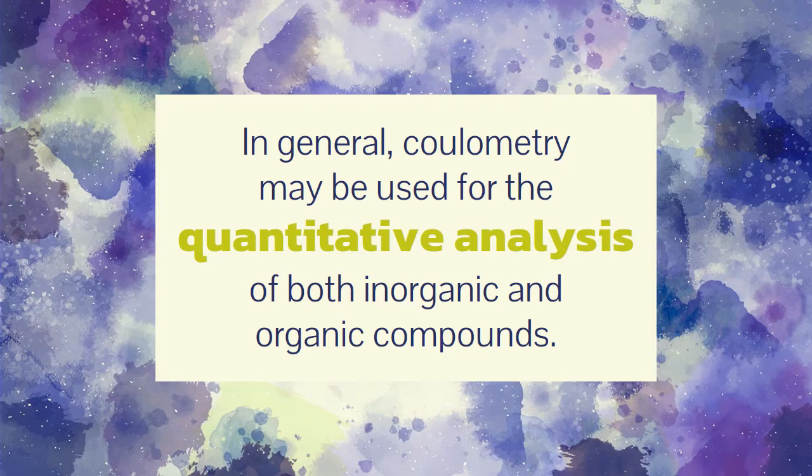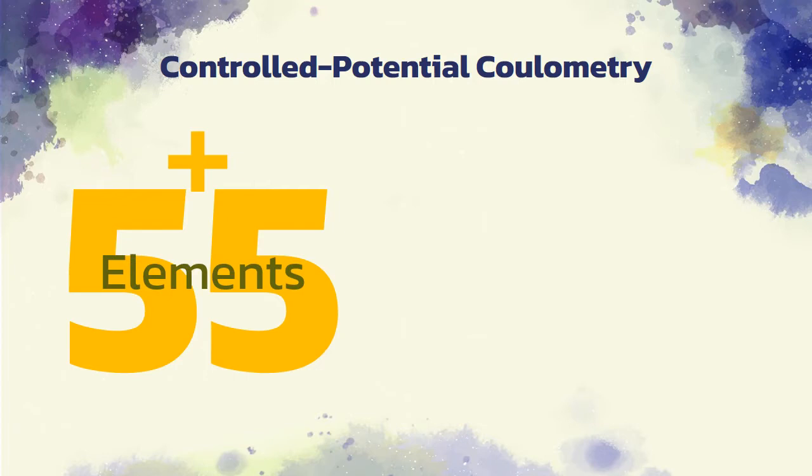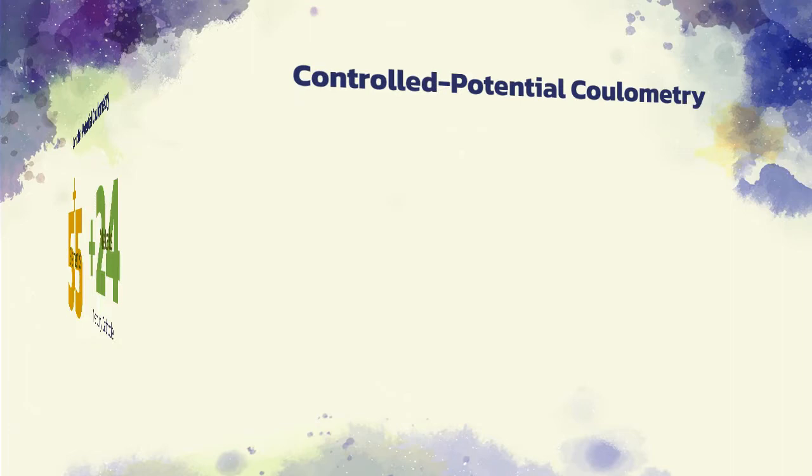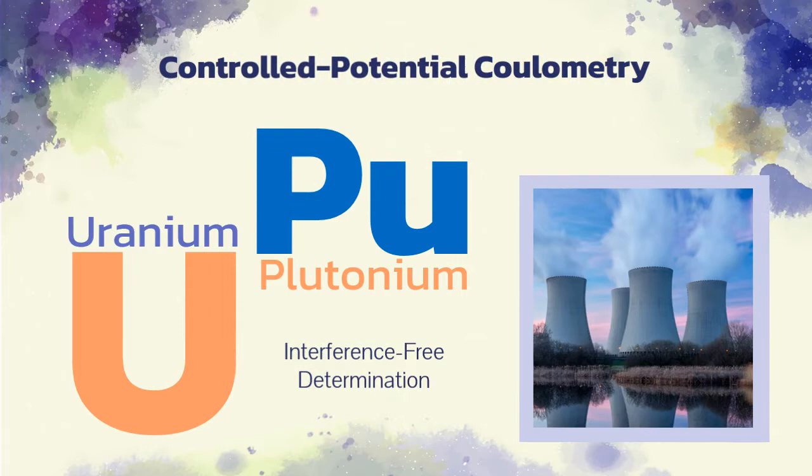In general, coulometry may be used for the quantitative analysis of both inorganic and organic compounds. At this juncture, we will discuss some of the applications of coulometric methods. Controlled potential coulometric methods have been used to determine more than 55 elements in inorganic compounds. Methods have been described for the deposition of more than 2 dozen metals at a mercury cathode. The method have also been used in the nuclear energy field for the relatively interference-free determination of uranium and plutonium.